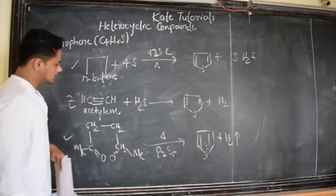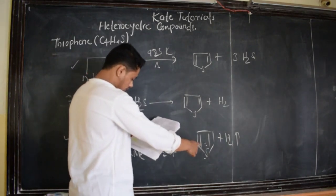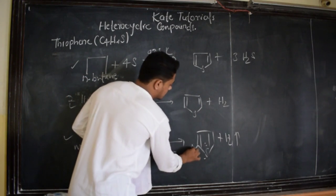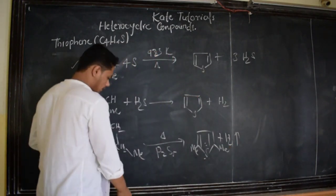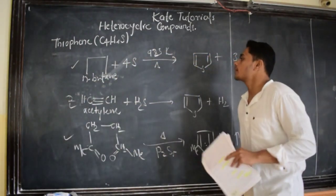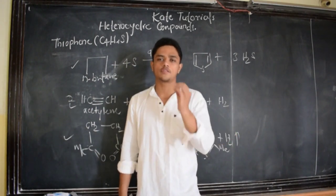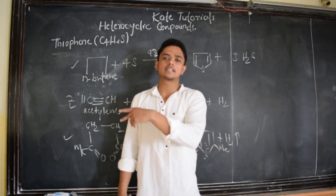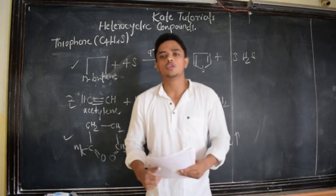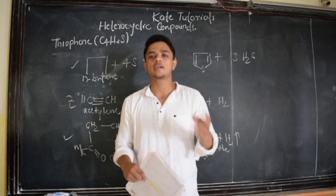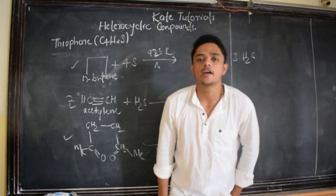These are the three methods by which we can prepare thiophene. A derivative of thiophene is 2,5-dinitrothiophene. In the next class we will discuss the electrophilic substitution briefly, as it is the same as in the case of furan and pyrrole — so I will explain it quickly and we can move further. Till then, take care and have a good day. Bye.